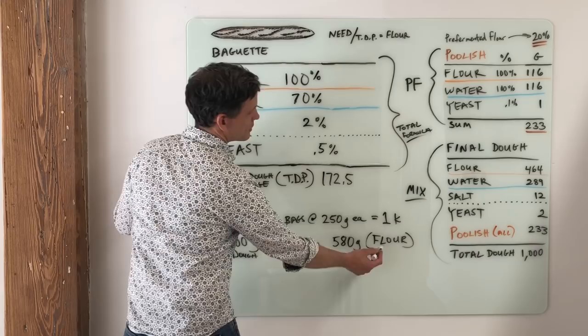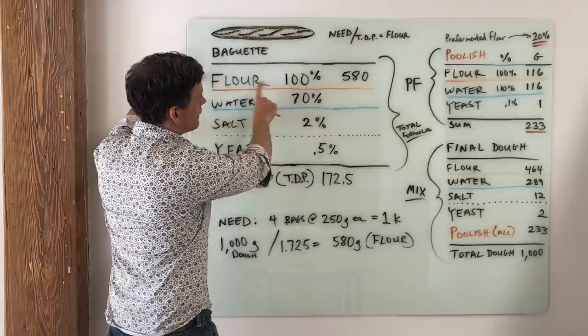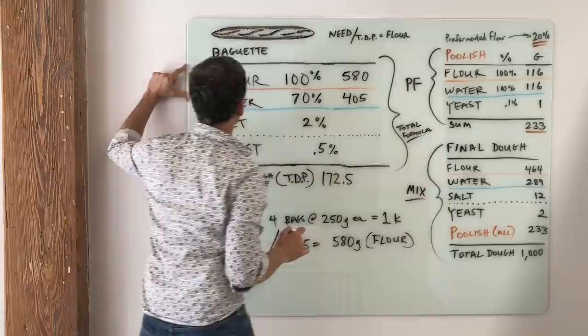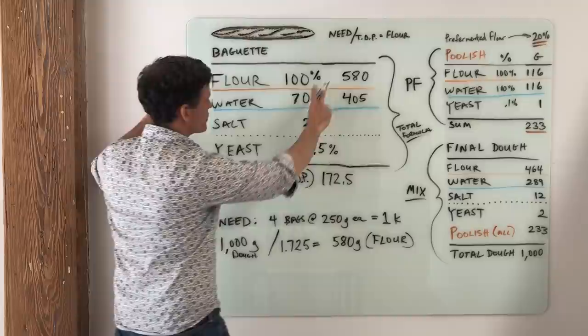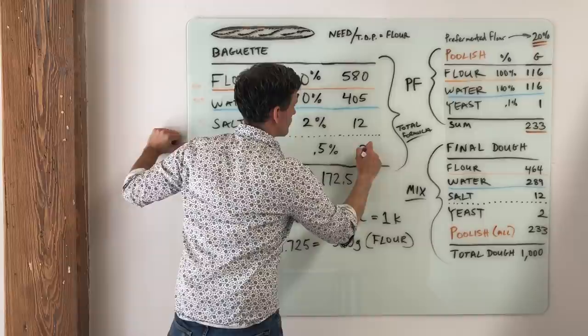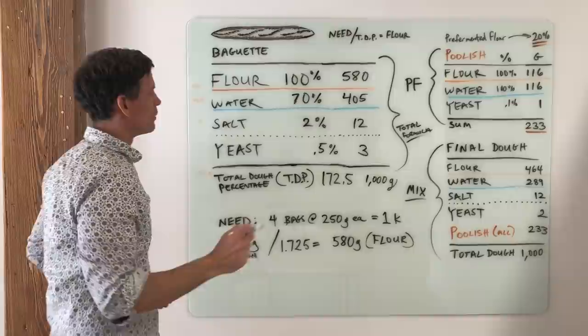580 is the flour amount. So I can go up here and I can write 580. And we already said that for every 100 parts of flour we need 70 parts of water, right? So 70% of 580, which is 405. And we know that we need 2% salt. 2% of 580 is 12. And half, one half of 1% of yeast, not a whole lot. That's three grams. And if we add that up, that is 1,000 grams.